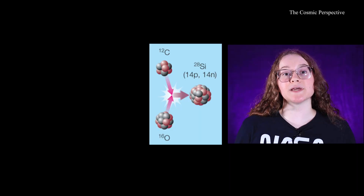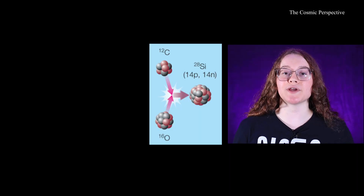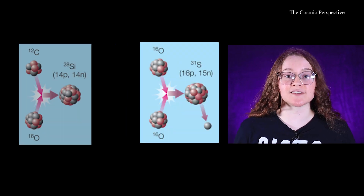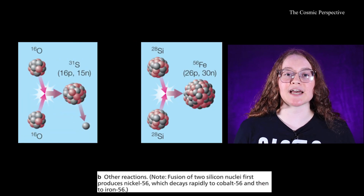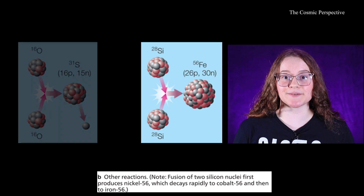For example, fusing carbon to oxygen creates silicon. Fusing two oxygen nuclei creates sulfur, and fusing two silicon nuclei generates iron. Some of these heavy element reactions release free neutrons, which may fuse with heavy nuclei to make rarer elements.